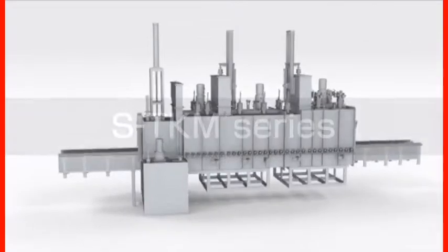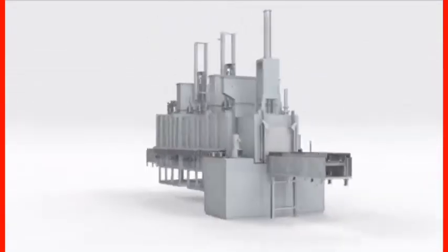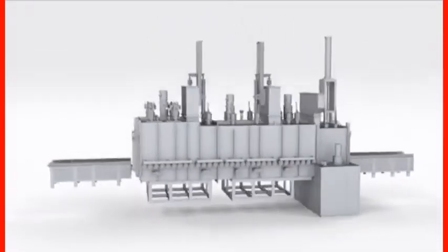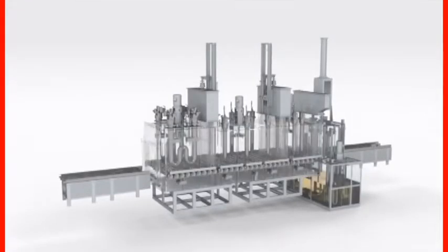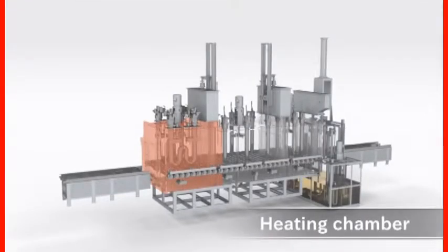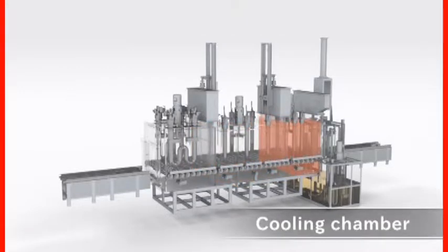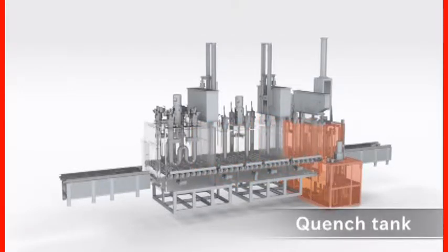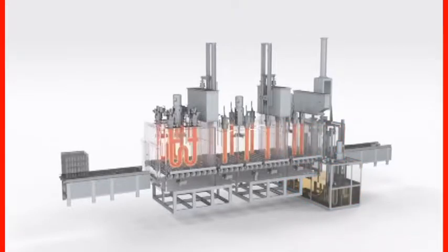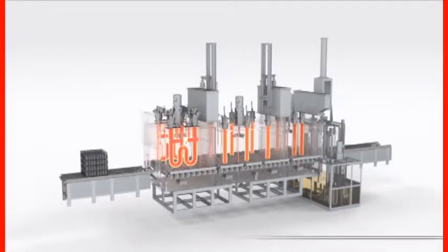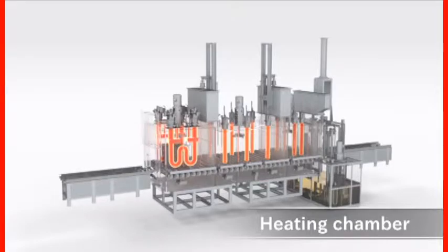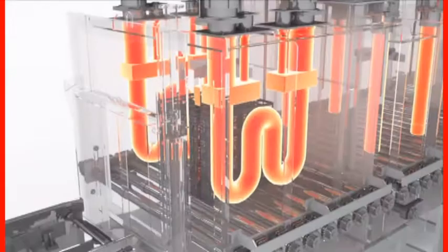The heat treatment furnace is the key part of the process line. The furnace is comprised of four stages: heating, carburizing, cooling, and quenching. First, the product is heated to a certain temperature in the heating chamber.